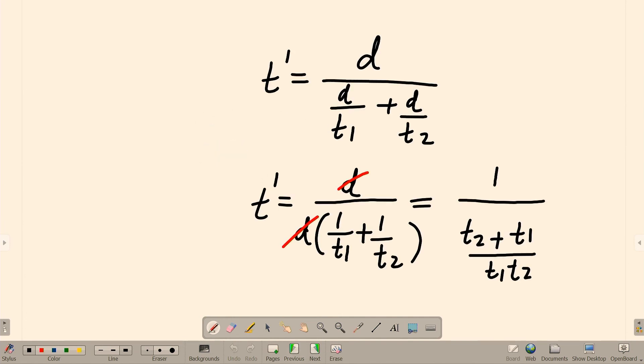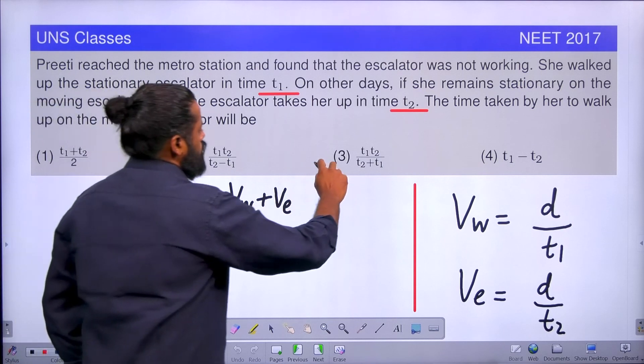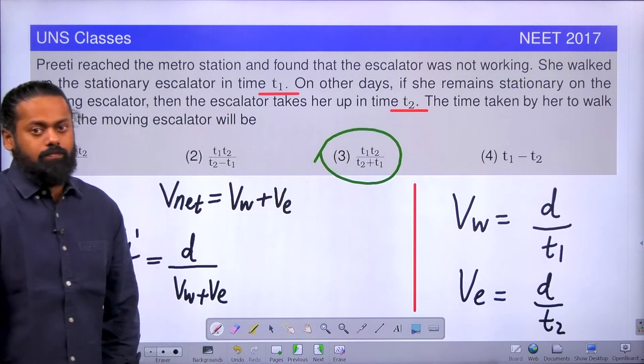Let us see which option is matching here. T1 T2 by T1 plus T2. The third option is the correct answer.